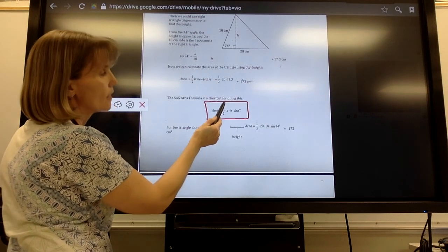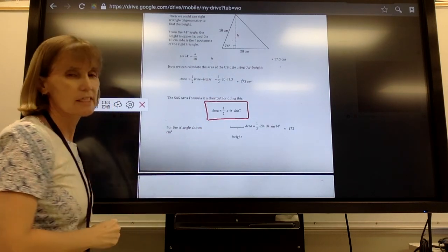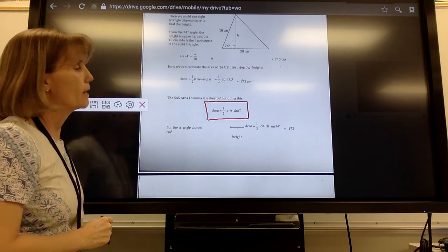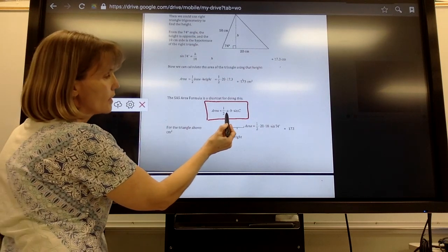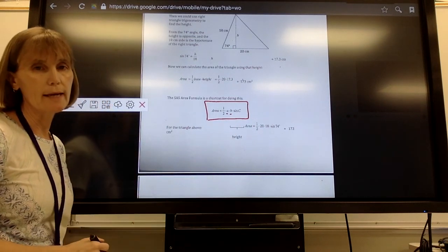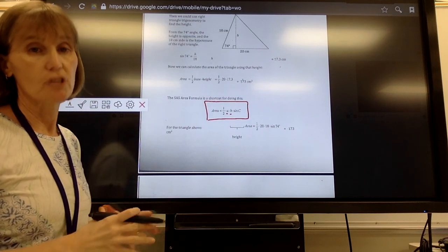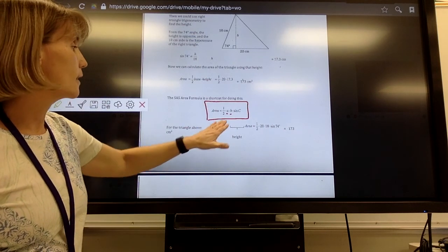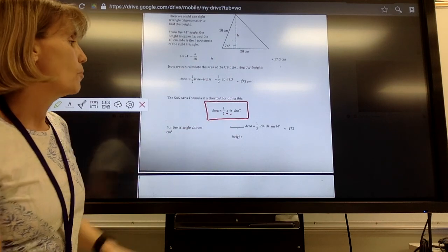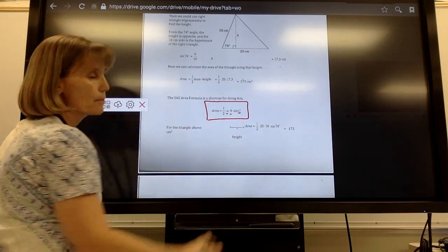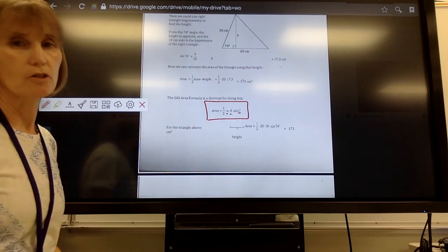That formula says the area of a triangle is equal to one-half times A times B times the sine of C. Notice that this A and this B are lowercase. That means they're side lengths. So you've got the side length A times the side length B. But notice that C is a capital C, so that's an angle measure.